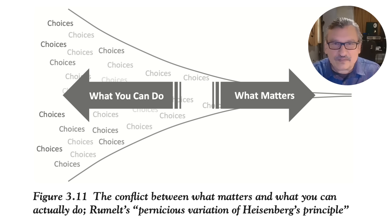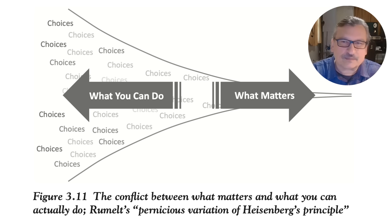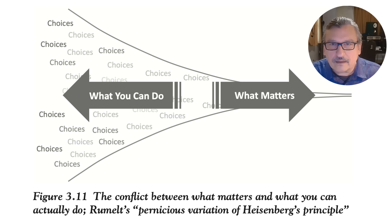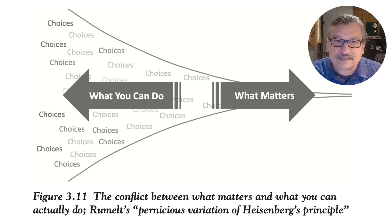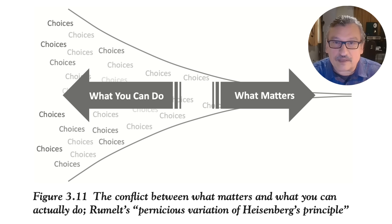Killer problem number one: there are so many choices to make that you can't possibly have an individual thought process for every choice. In a bike shop, you can't just choose each bike, each accessory, each marketing scheme independently — they have to be done in a coherent way. You can't have a bike line made up of disparate bicycles that make no sense as a complete line. That's problem one: the sheer number of choices and actions, and that they must be coherent.